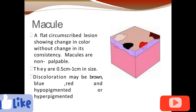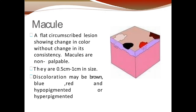The first one is macule. A macule is a flat, circumscribed lesion showing a change in color without change in its consistency. Macules are non-palpable. It is a change in color of the skin without change in consistency — there is only change in color. It is not elevated; it is flat, its border is well circumscribed, meaning its outline is well defined and easily determined. Because it is non-elevated, it is non-palpable.